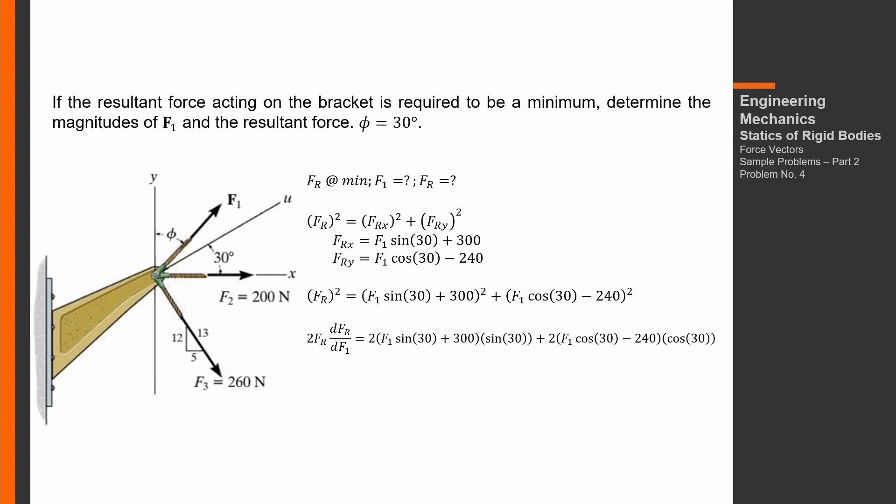Differentiating FR² with respect to F1: 2FR·(dFR/dF1) equals 2(F1 sine 30 + 300)(sine 30) plus 2(F1 cosine 30 − 240)(cosine 30). To find the minimum, the slope — the first derivative of FR with respect to F1 — is set to zero. Dividing by 2 gives: (F1 sine 30 + 300)(sine 30) plus (F1 cosine 30 − 240)(cosine 30) equals 0.